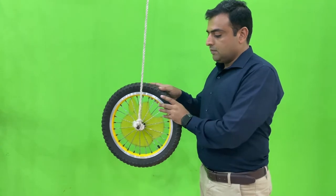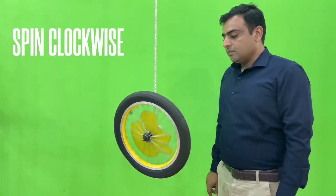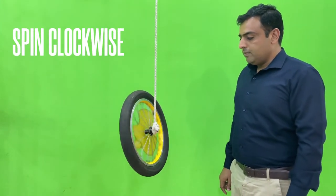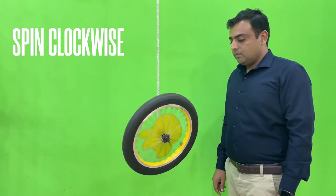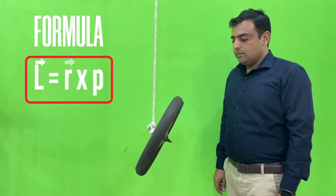After that we will spin the tire from left to right. The tire will keep on moving without falling down and it will move in the clockwise direction. When we spin the tire from right to left, the tire will keep on moving without falling down in an anti-clockwise direction. All these motions of tire are due to law of conversion of angular momentum.